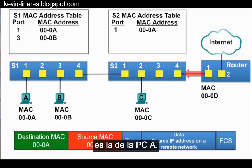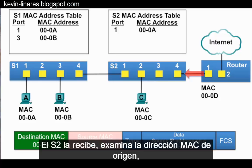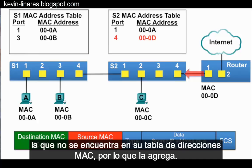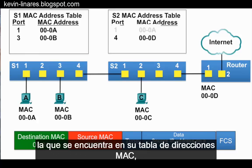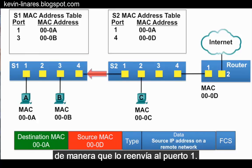The frame is sent to switch S2. S2 receives it and examines the source MAC address, which is not in its MAC address table, so it adds it. It then examines the destination MAC address, which is in its MAC address table, so it forwards it out port 1.